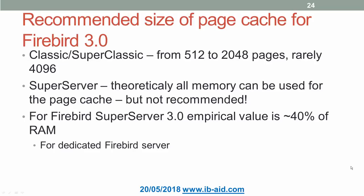Firebird 3 introduced a new revamped SuperServer architecture which theoretically can consume all available memory for the page cache. However, as discussed in the first part of the webinar, we must align memory consumption with the expectations of the OS Memory Manager. On default Windows, maximum 50% of RAM can be used for paged memory. For a dedicated Firebird server, the empirical limit for the Firebird 3 SuperServer page cache is 40% or less.